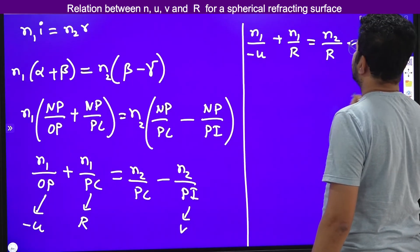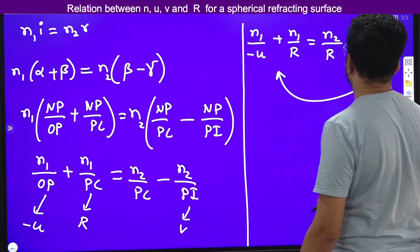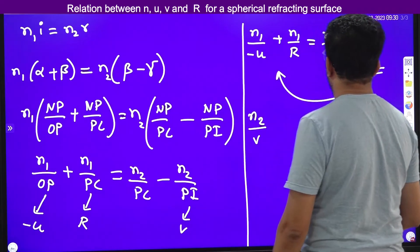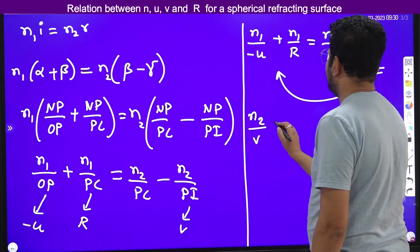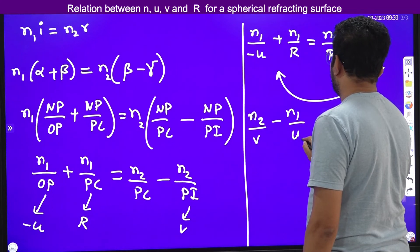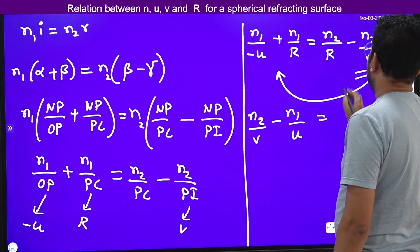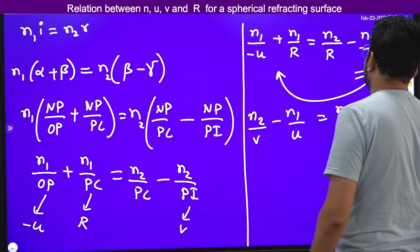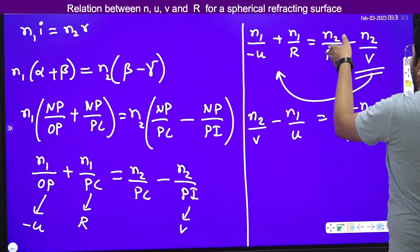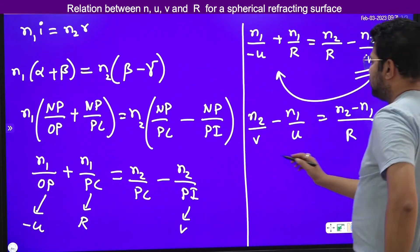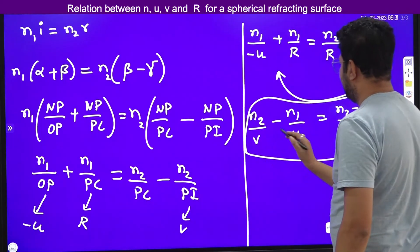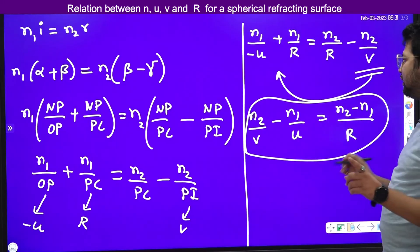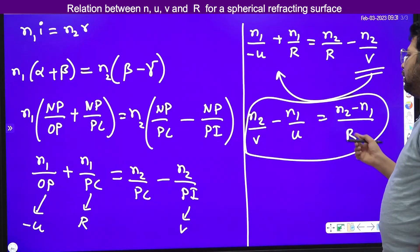Shifting the n2/v term to the left-hand side gives plus n2/v, and shifting n1/r to the right-hand side. We get: n2/v − n1/u = (n2 − n1)/r. This is the relation between n, v, u, and r.